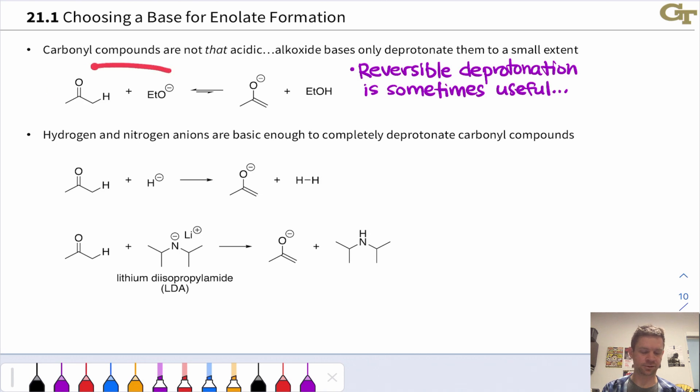For example, if you take acetone and you mix it with the ethoxide anion, the favored side of this acid-base equilibrium is the left-hand side. With the negative charge on ethoxide, the enolate is generated only to a very small extent. That's why we call this reversible deprotonation, since by and large it's the reverse reaction that dominates.